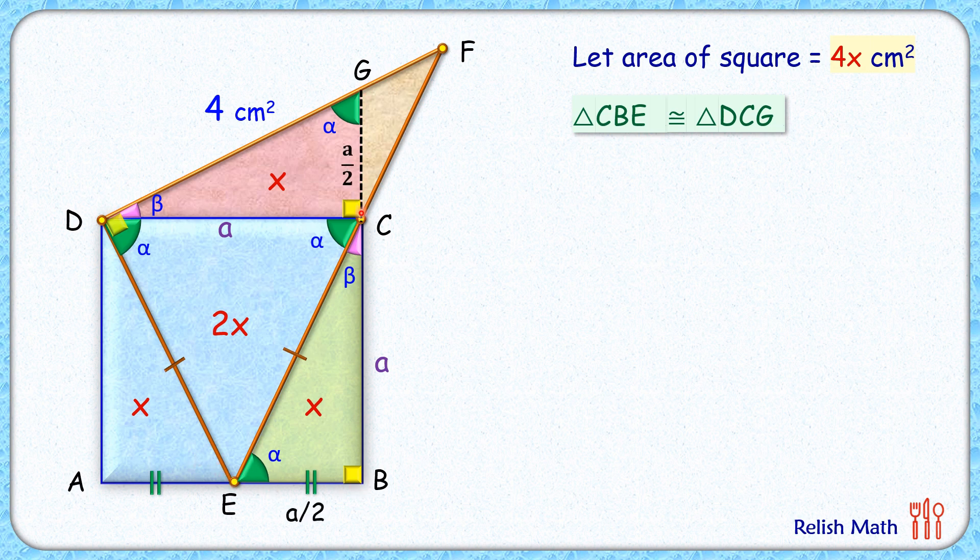Thus, GC will also be a by 2 centimeters. Now, these two angles are vertically opposite angles, so this angle here will be beta degrees. Let's assume this angle here as delta degrees. If you look at the two triangles, one is this full triangle DCF.